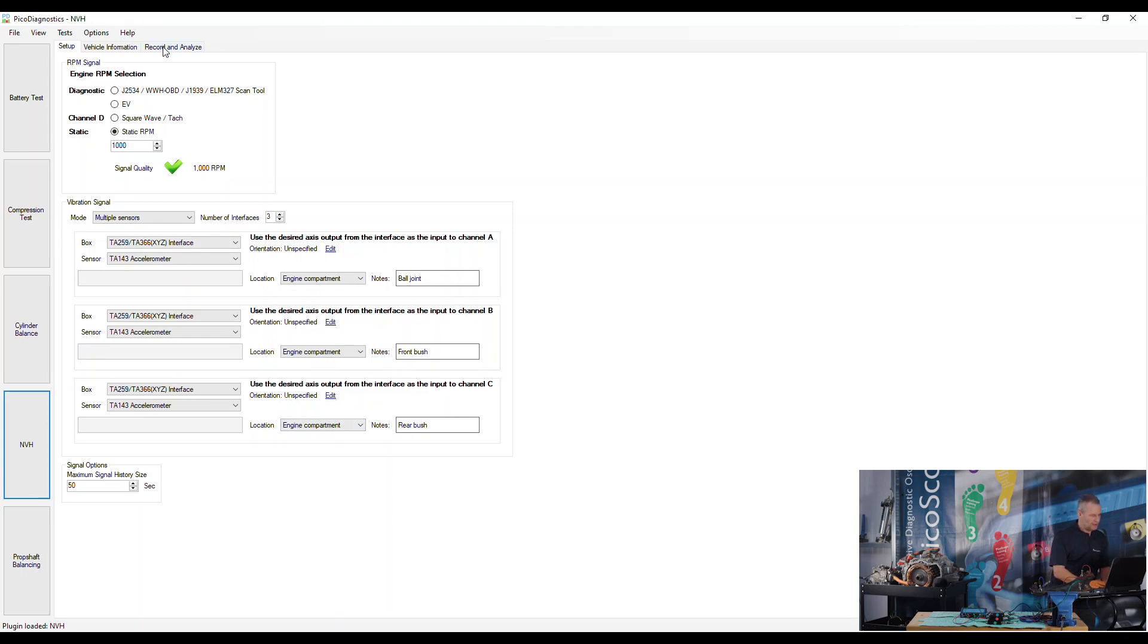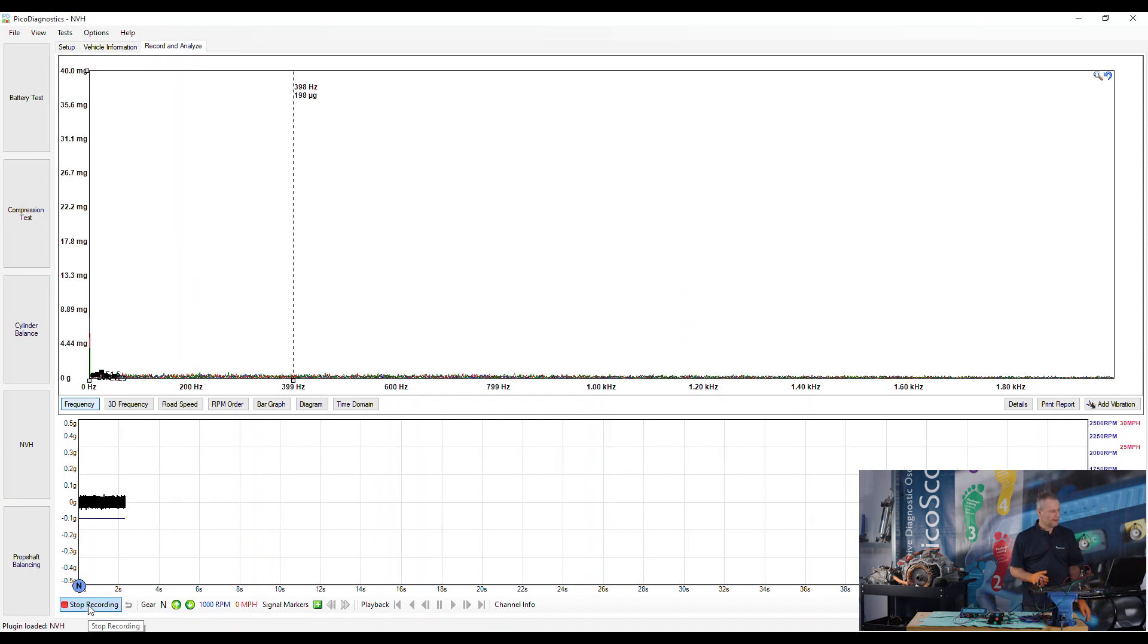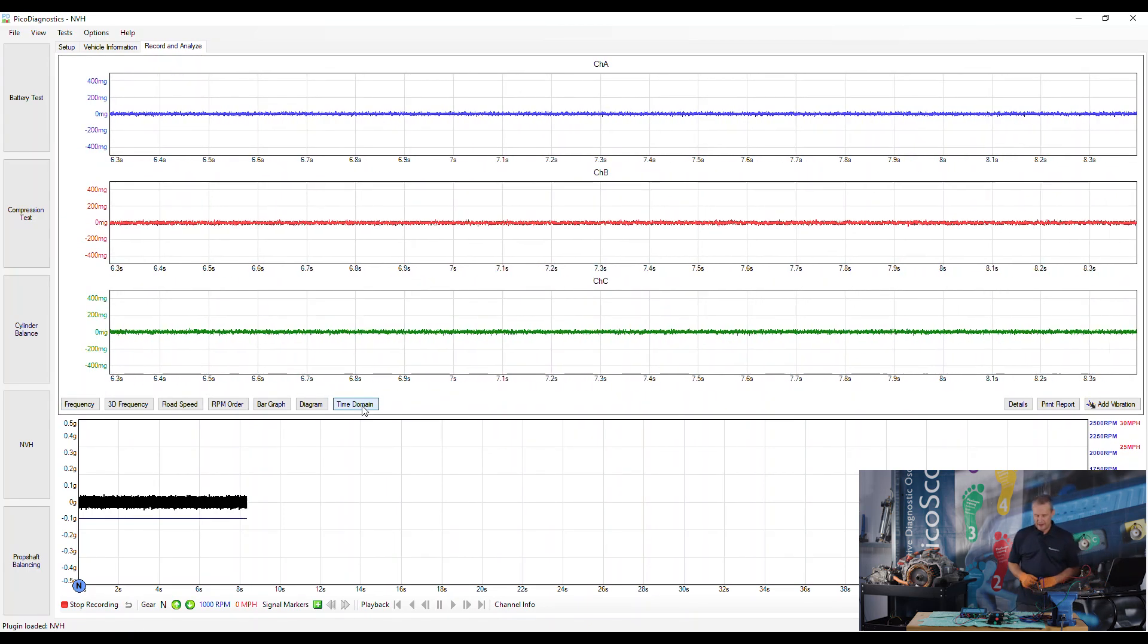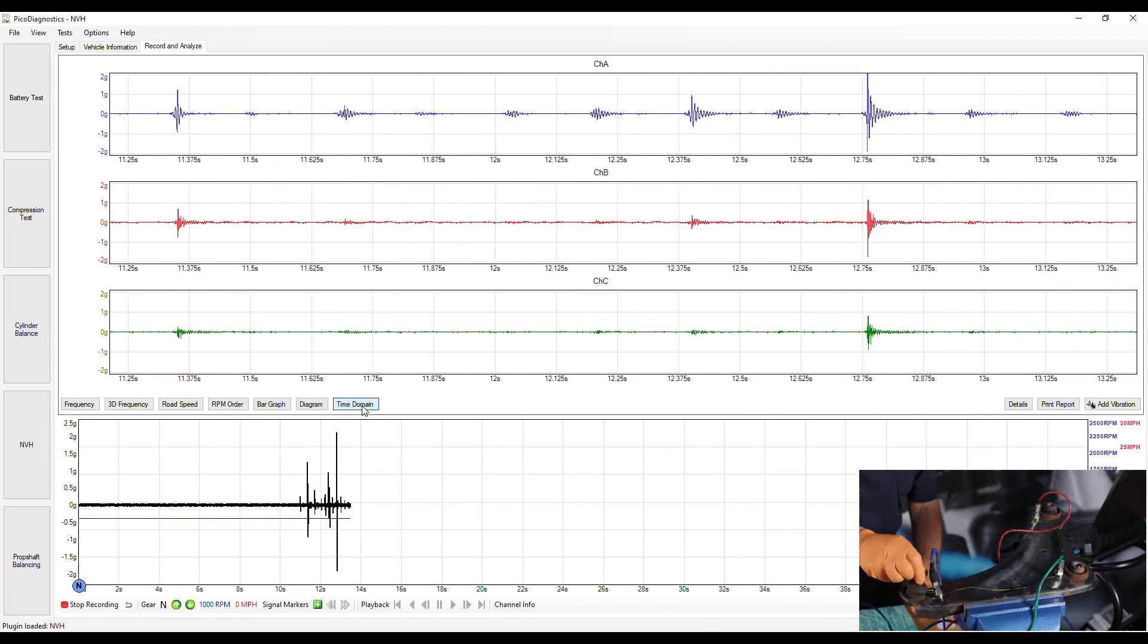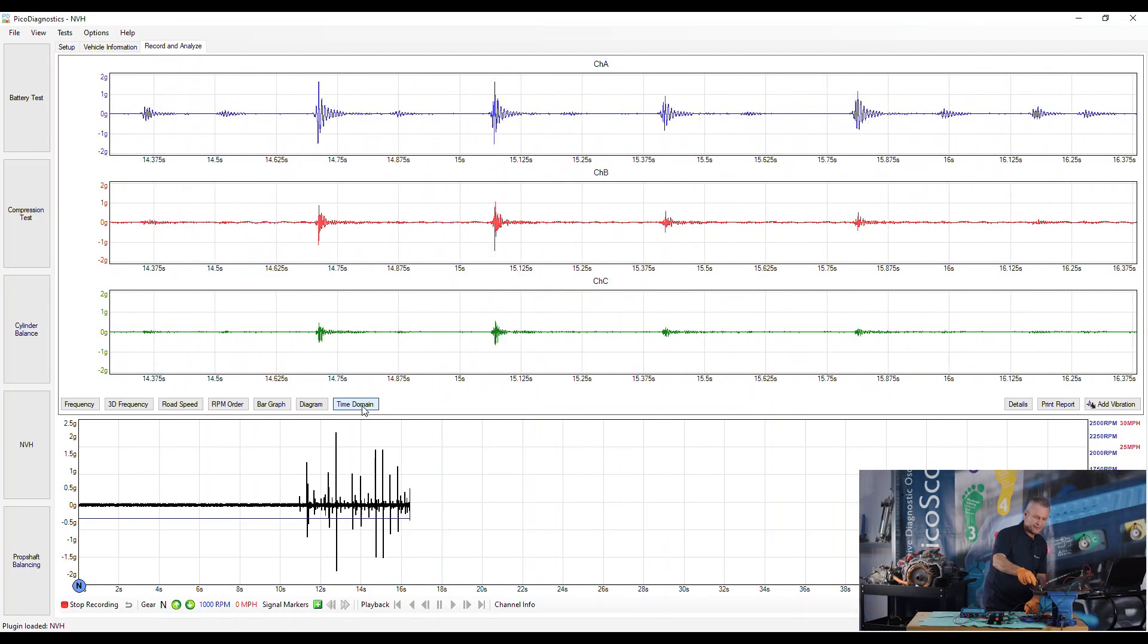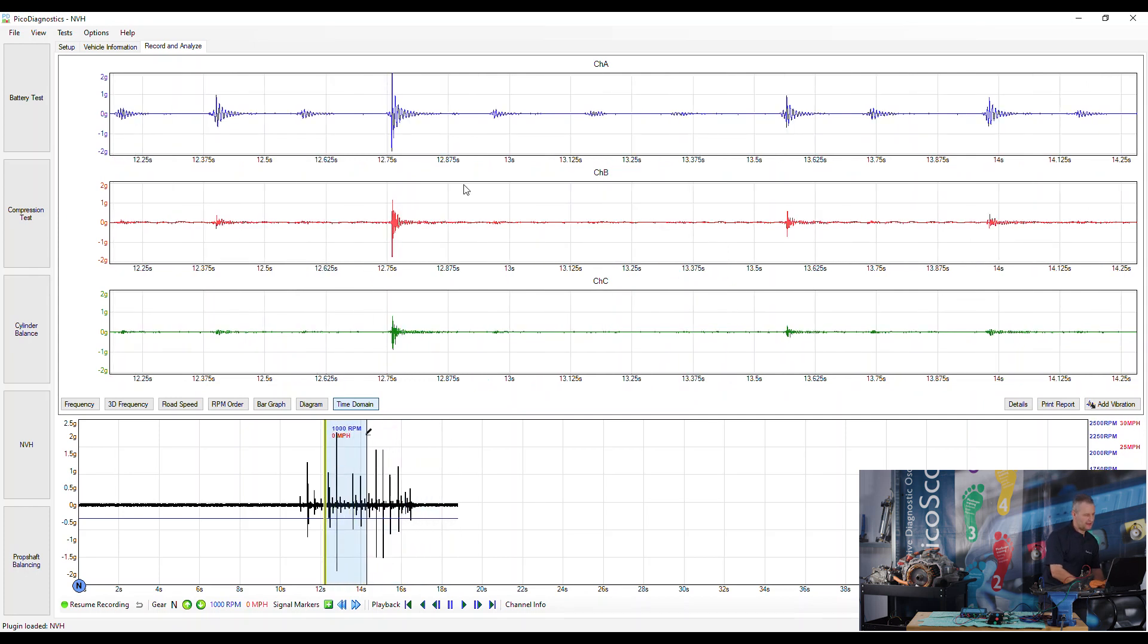We'll go to record and analyze, start recording. By default we're in the frequency domain; we want to change to time domain. If I now pull on this ball joint, you'll see that we've got activity there. All I'm doing is moving the ball joint about its seat. We'll pause the software and concentrate on this area around about 12.7 seconds. It's safe to say that the greatest response was from the blue accelerometer because it is next to the source of the noise.